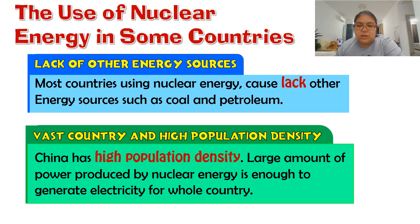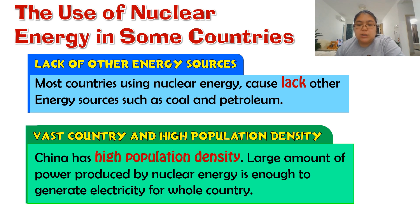For countries with a high population density — for example China — a large amount of energy is needed. That's why they use nuclear power to produce enough energy to supply all the population. So this is a good choice for countries with high population.